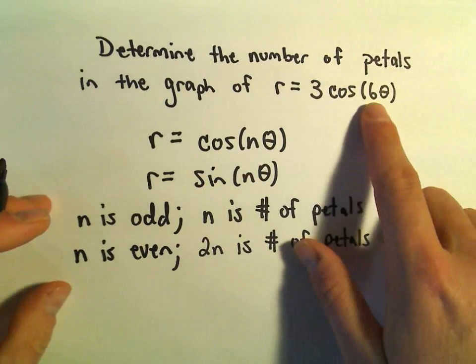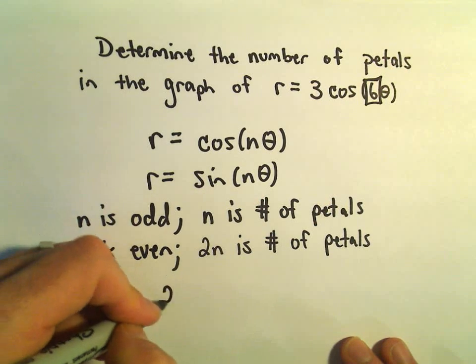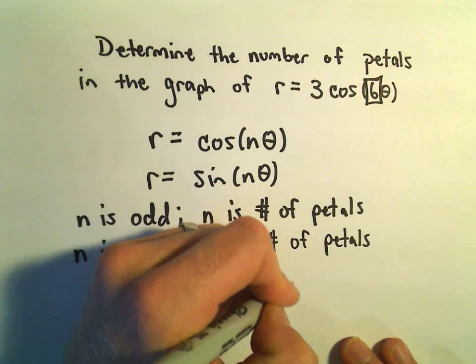Well, in this case, our n value is just 6. So in our problem, we would have 2 times 6, or 12 petals total.